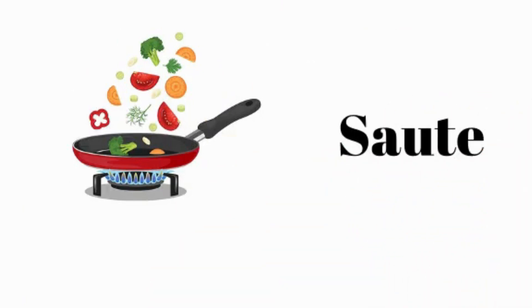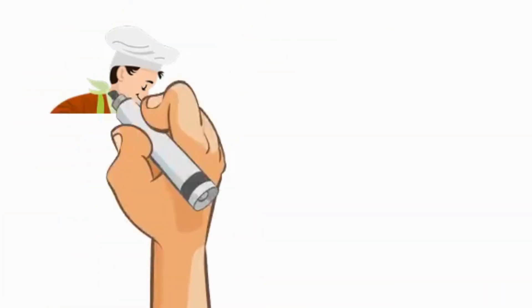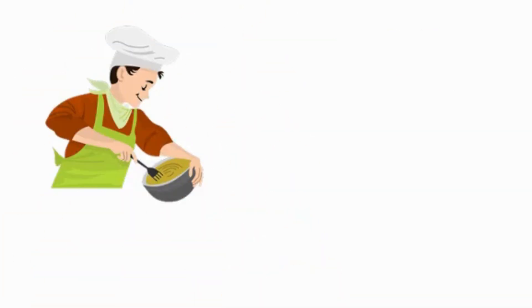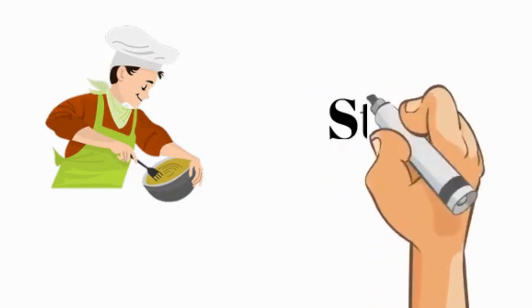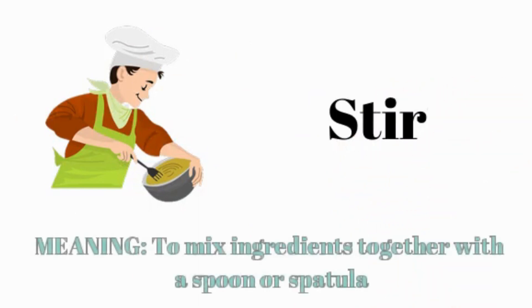Saute: meaning to cook in a small amount of oil or fat over high heat. Stir: meaning to mix ingredients together with a spoon or spatula.